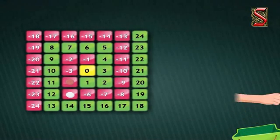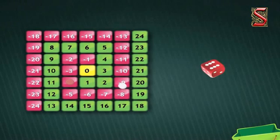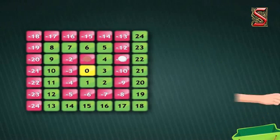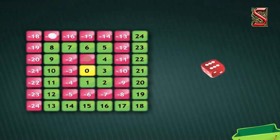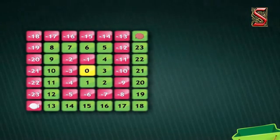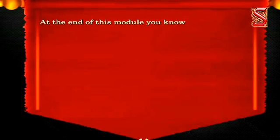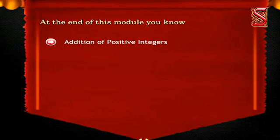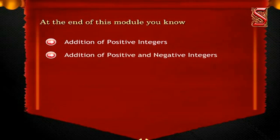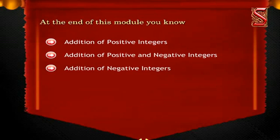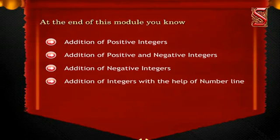This is how they continued to play till one of them reached either negative 24 or positive 24. Looks like a fun game, isn't it? Well, this is the lesson for today's class too. At the end of this module, you should be able to understand adding positive integers, adding positive and negative integers, adding negative integers, and adding integers with the help of a number line.